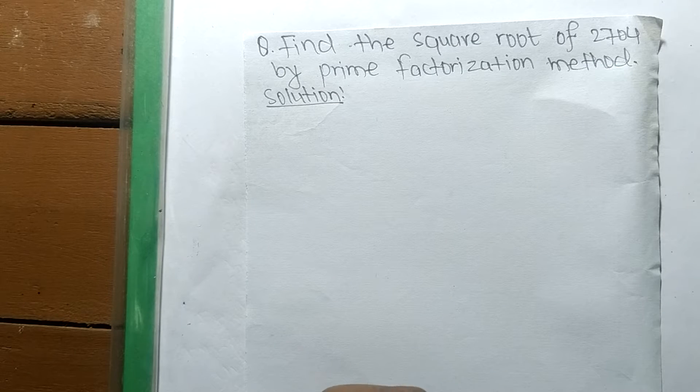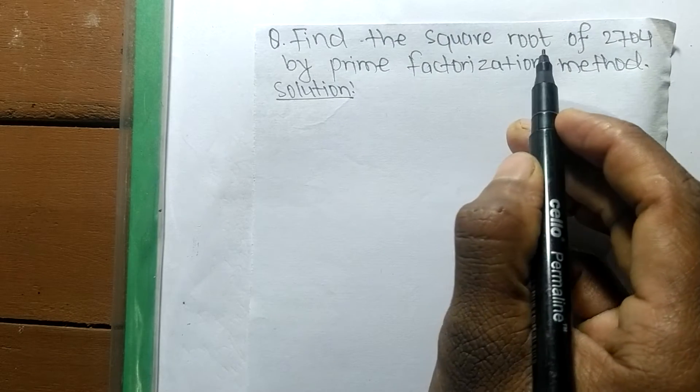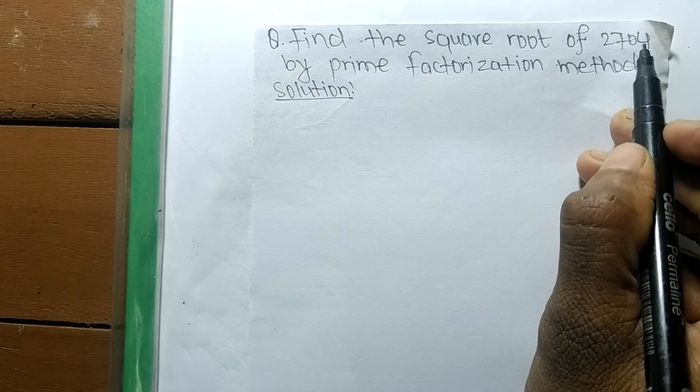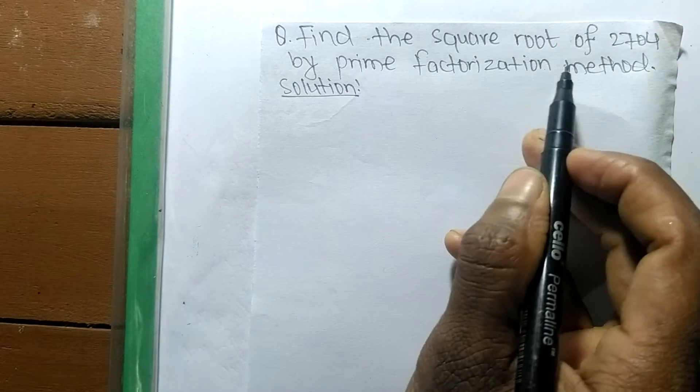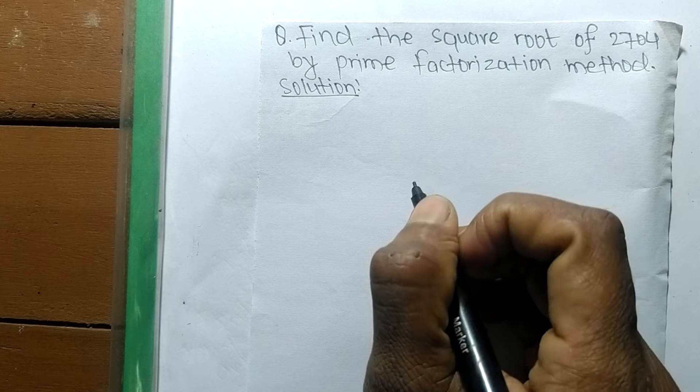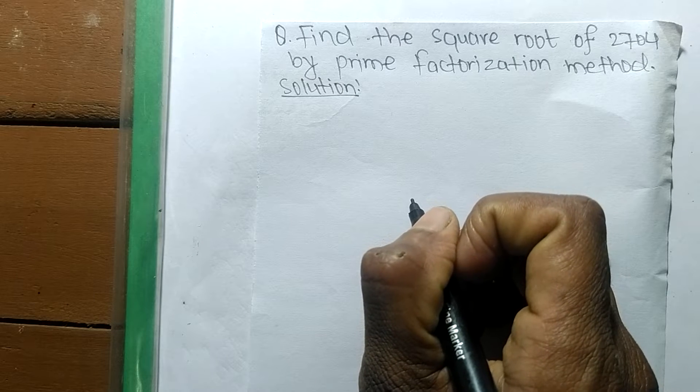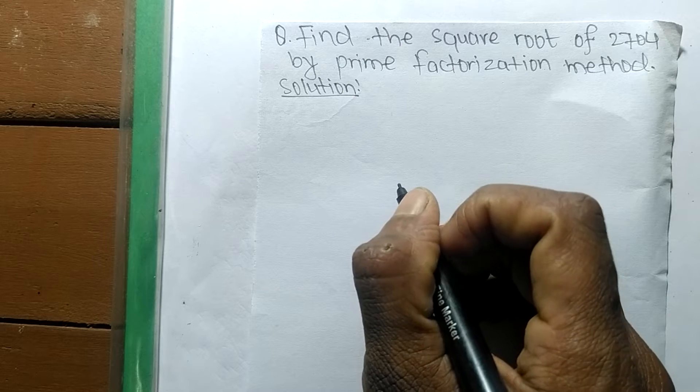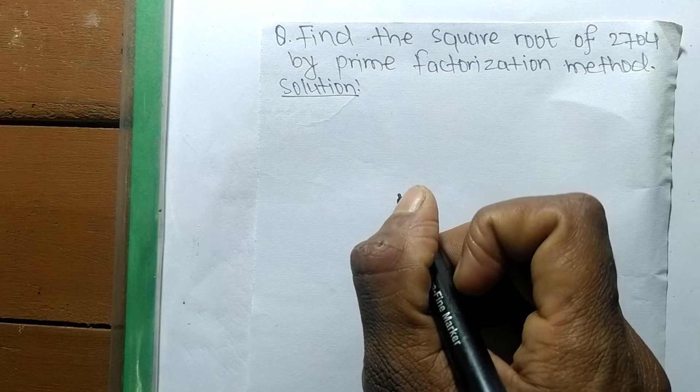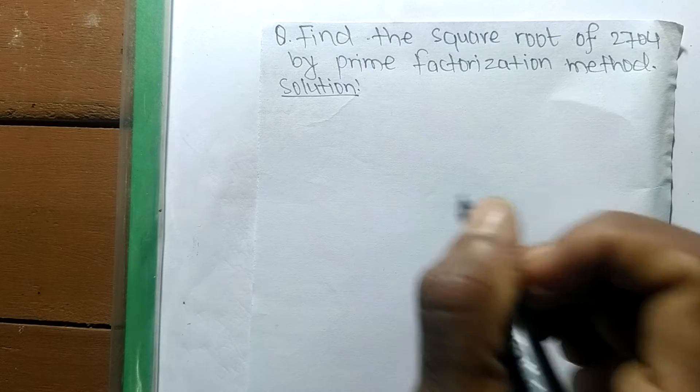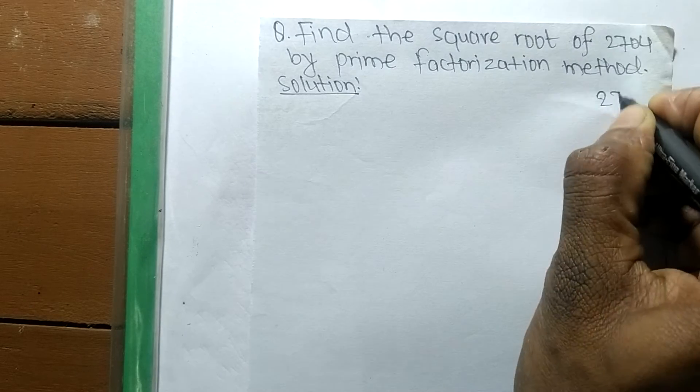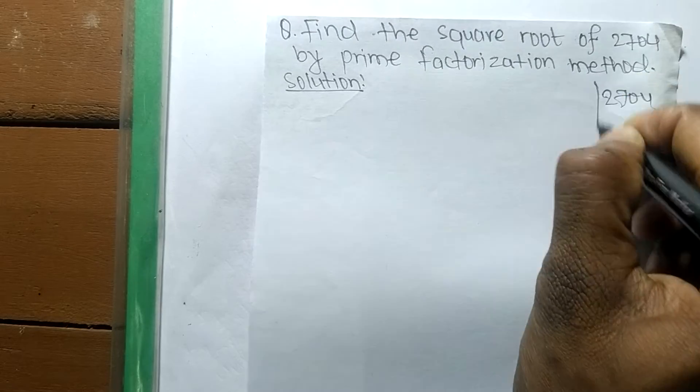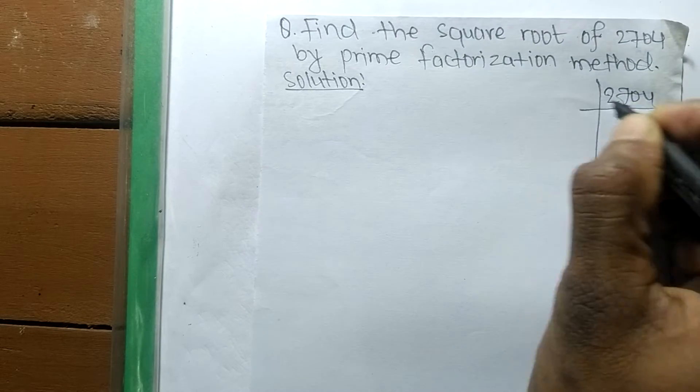Today in this video we shall learn to find the square root of 2704 by prime factorization method. To find the square root by prime factorization, first we have to find the prime factors of the given number. Our given number is 2704, so we have to find out its prime factors.